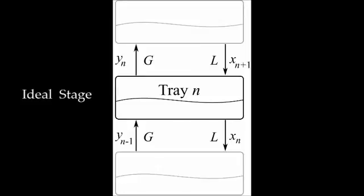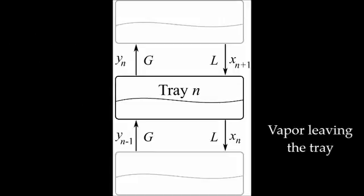In ideal stage, the liquid leaving the tray is in equilibrium with the vapor leaving that tray.